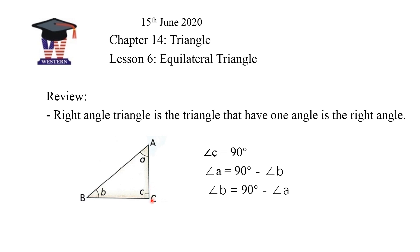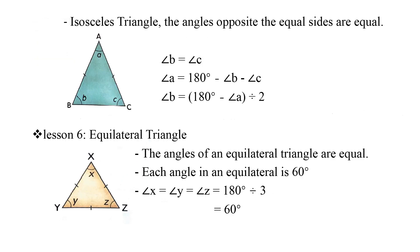Yes, to find angles in a right angle triangle, if you want to know angle A, you just take 90 degrees minus angle B. If you want to find angle B, you just take 90 degrees minus angle A.